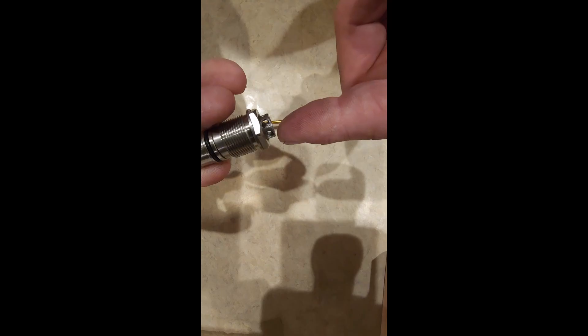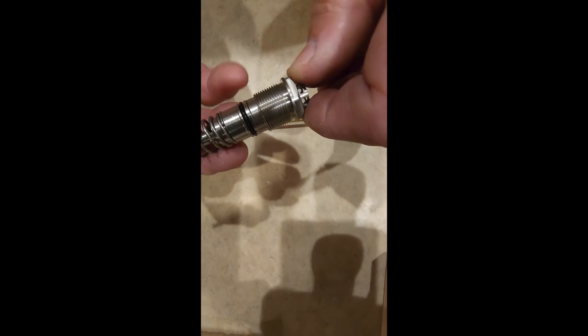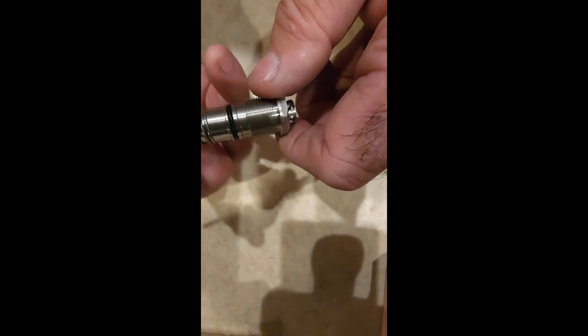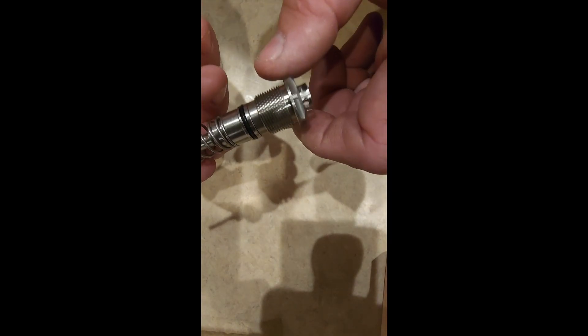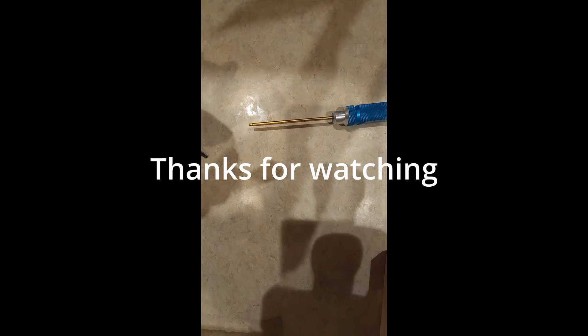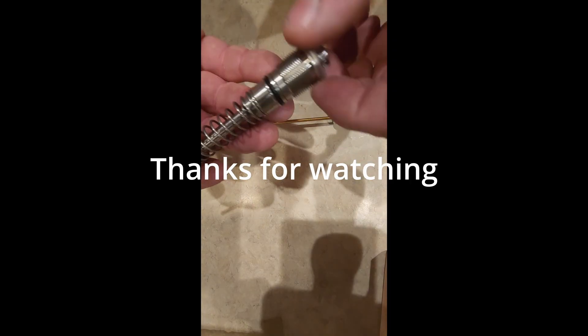And then, before you shoot it, back this out a bunch, so you don't accidentally lodge a projectile in the barrel, because you didn't have enough air to get it out all the way. So, like I've said in my other videos, I like to start with this open, and then bring it in to my point to where I want to be. That way, it'll keep you from lodging stuff inside the barrel. But, there you go. That's the dwell valve.